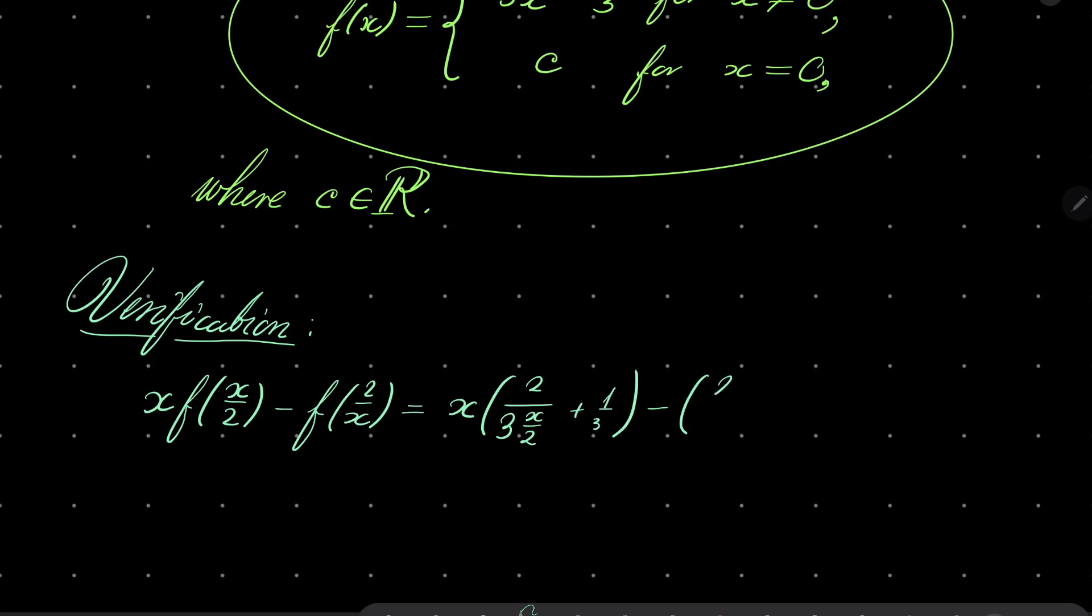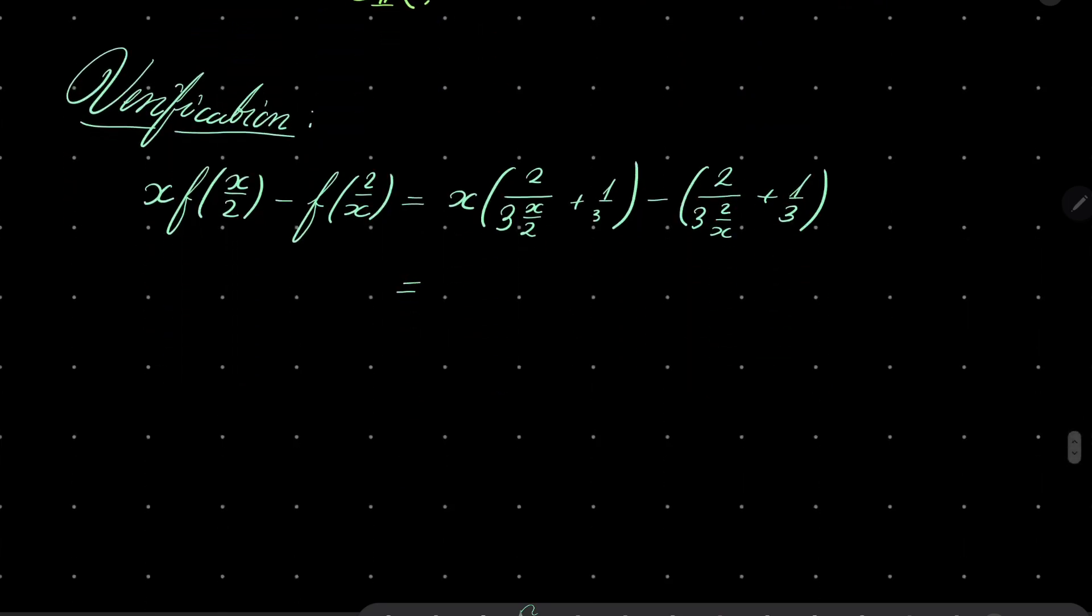...2/(3(2/x)) plus 1/3. And now we have, let's see, 4x/(3x) plus x/3 minus x/3 minus 1/3. So it's easy to see that it equals 1, so it is verified.